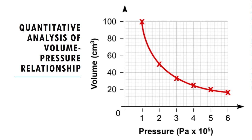From your observations, when the pressure by means of the plunger is increased, the volume of the gas decreases. But when the plunger is pulled — meaning pressure is decreased — the volume of the gas increases. The pressure was plotted on the x-axis as the independent variable, and volume on the y-axis as the dependent variable.